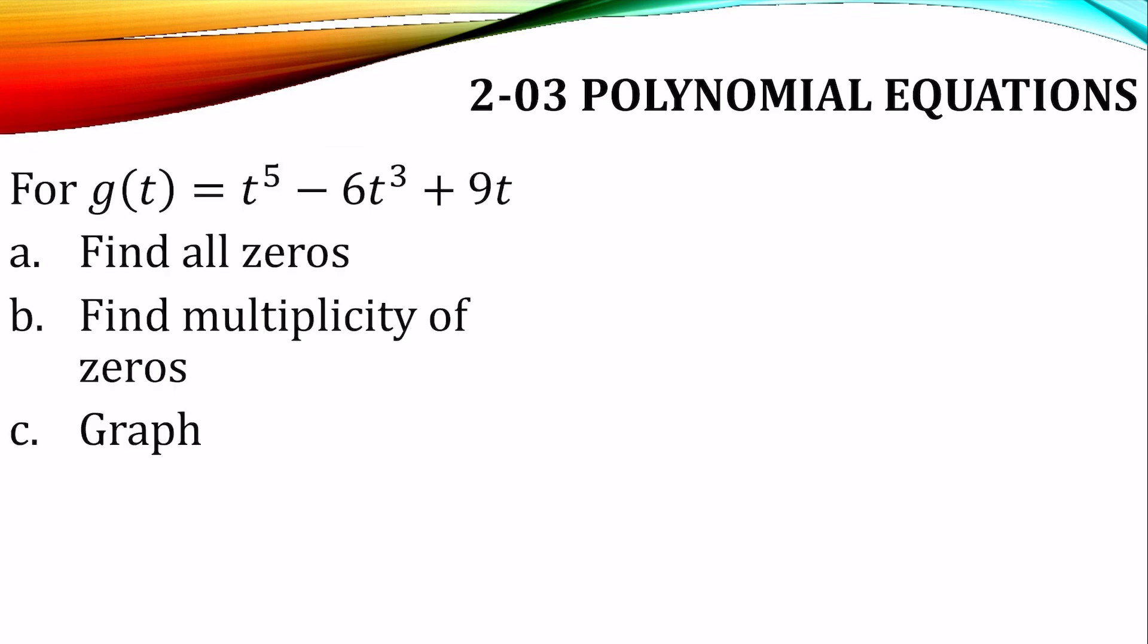Alright, for our first example, let's find all the zeros. So we'll make this equal to zero, and then we need to solve it. Let's solve it by factoring. I can factor out a t because there's a t in everything. Let's leave t⁴, 6t², and 9.